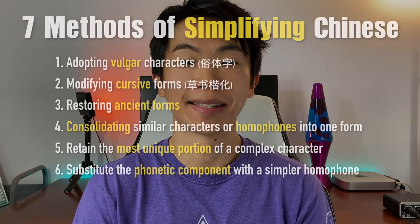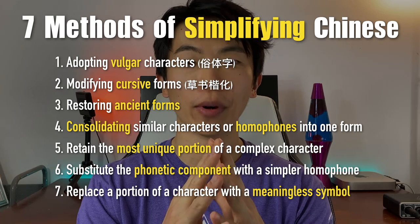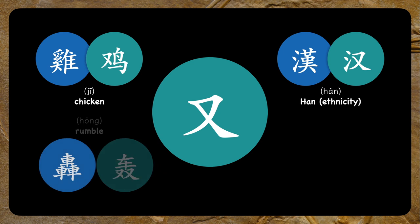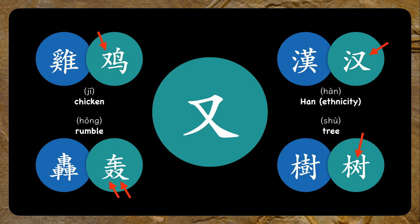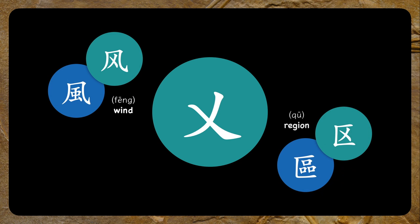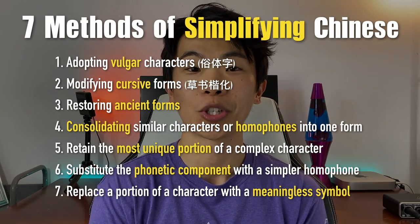The last method is to take a complex portion and replace it with a meaningless symbol. This is honestly the most criticized one on the list. Whenever people complain about simplified characters, they often bring up the fact that one particular component is incredibly overused. It's like whenever they couldn't figure out how to simplify a character, they just stuck it in there — it managed to replace the left half of 'chicken,' the right half of 'han,' the bottom of 'rumble,' and the middle of 'tree,' with zero consistency. While most of these characters are fairly modern, some like 对 (dui) date back to the Song Dynasty. There's also a less common ax symbol used in the same manner, like in the characters for wind and region. That concludes the seven primary ways Chinese characters were simplified.